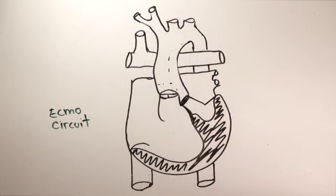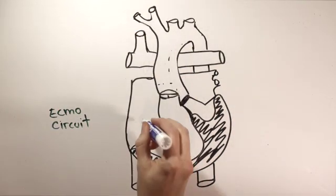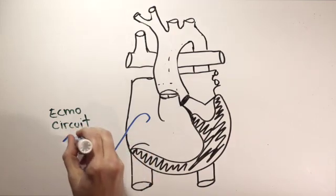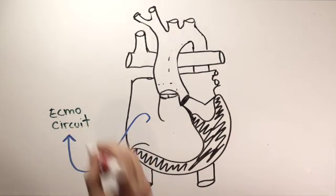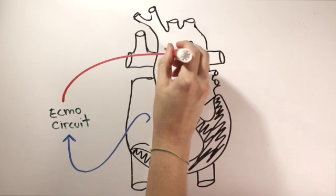How about femoral or central cannulation, which are similar in this anatomy? Now, instead of draining blood from the upper body, the cannula are only draining blood from the right atrium and the lower body.